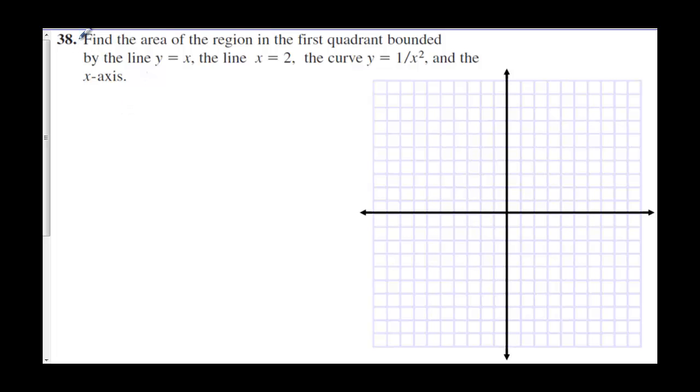This is section 7-2, number 38. Find the area of the region in the first quadrant bounded by the line y equals x, the line x equals 2, and the curve 1 over x squared, and the x-axis.